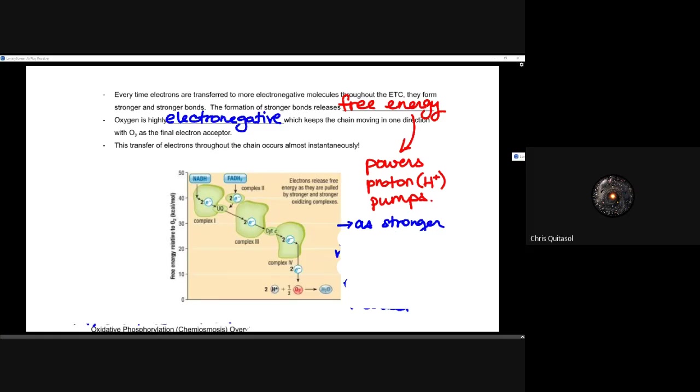Okay, those proton pumps are going to help create that free energy. Oxygen is highly electronegative which keeps the chain moving in one direction, which we talked about earlier. That O2 is that final electron acceptor.